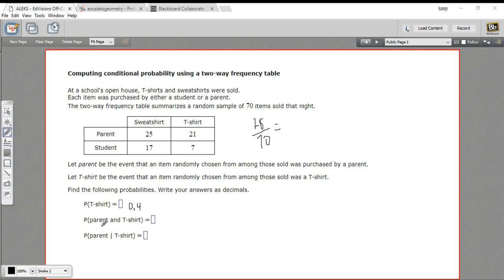Alright, this next one says the probability of parent and t-shirt. In that case, we're looking for the probability of just this category right here, the parent line, the t-shirt column. And this is going to be out of the total again.